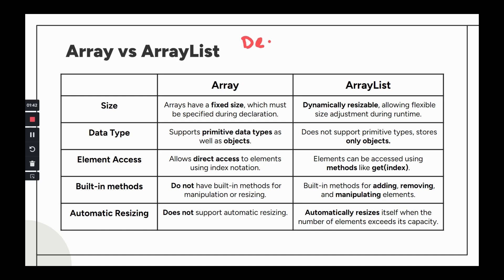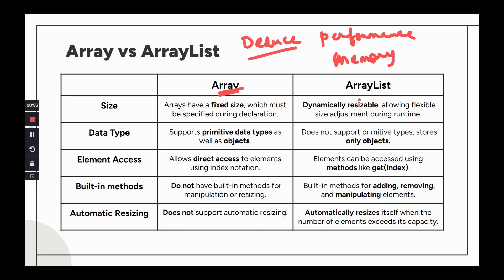When to use which: because of its simplicity and fixed size, plain arrays offer better performance with less memory overhead. ArrayList uses objects and has memory overhead due to dynamic resizing. So memory and performance-wise, arrays are always better. Use an array when you need constant time access and the size is known. Use ArrayList when you need flexibility, dynamic resizing, or when you don't know the size beforehand.